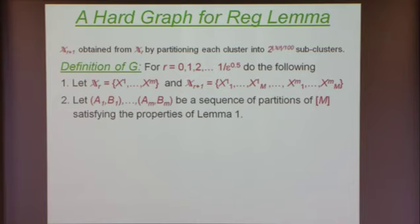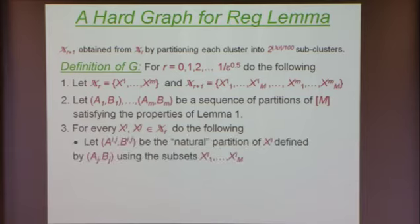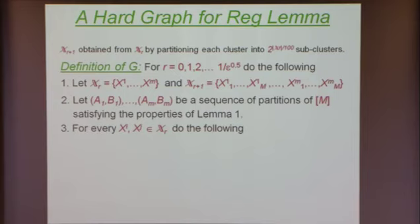Now I need to define what the graph is — what edges I'm adding at iteration r. I'm focusing on two clusters in partition X_r: X_i and X_j. I'm going to tell you how I update the weight of the edges between X_i and X_j. I'm going to take partition A_j, B_j, and using this partition I'm going to partition X_i into two sets, which I'll call A_{ij} and B_{ij}.